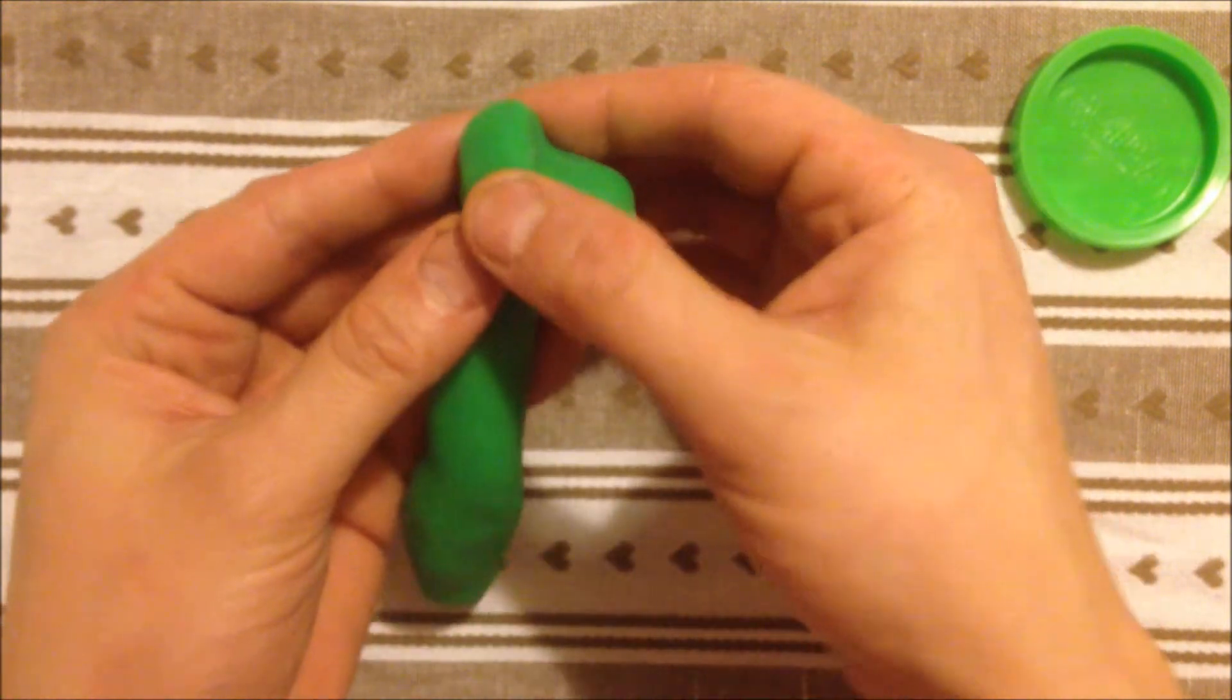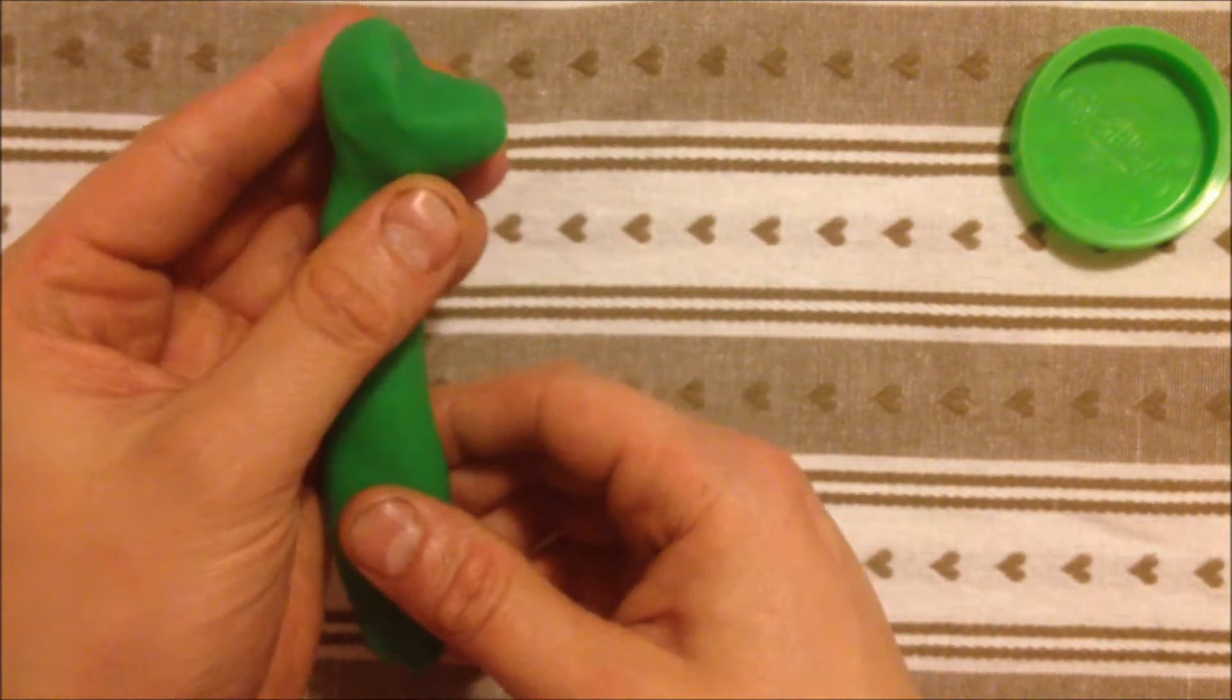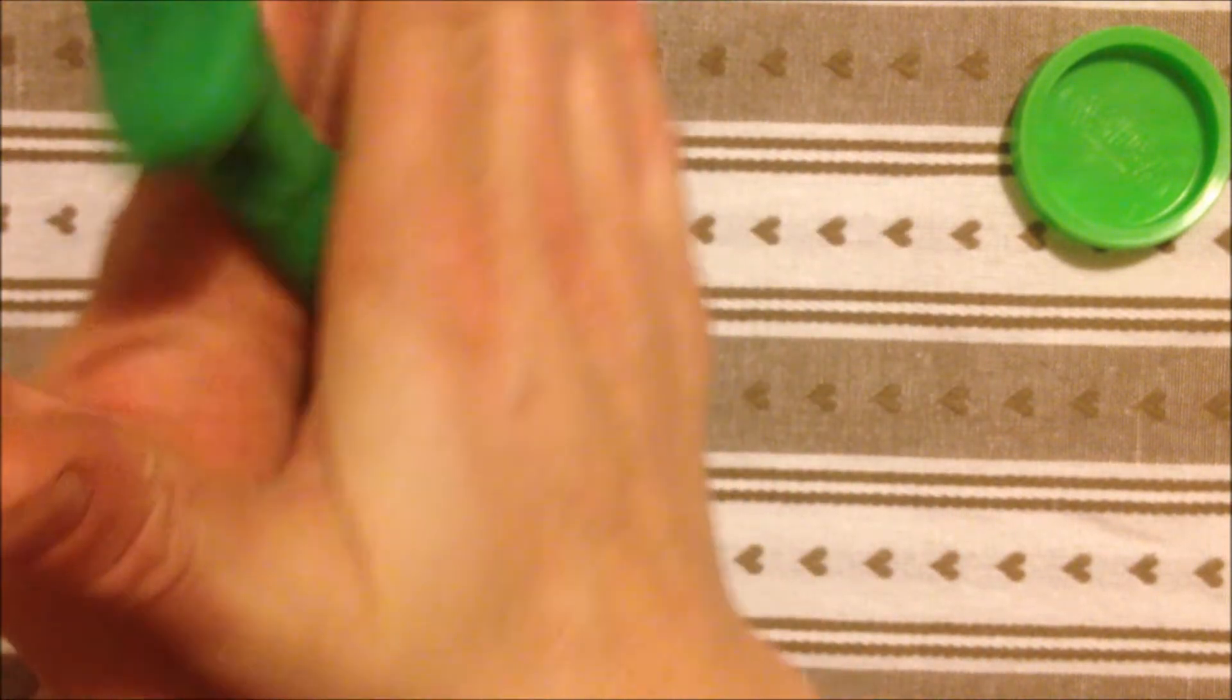That's how you want to make his head, sort of like that. Sort of like an L shape. And just continue to roll this tail out.